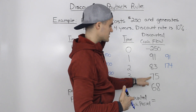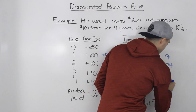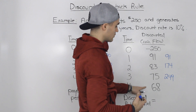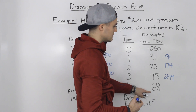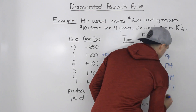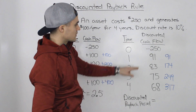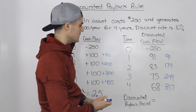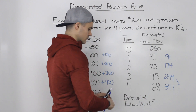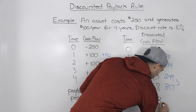In year three, the present value of the cash flow is $75, so in total we've recovered $174 plus $75 — that's $249 worth of present value cash flows. Then in year four we get $68, so $249 plus $68 gives us $317 recovered in present value cash flows. We recovered the initial $250 somewhere between year three and four, so the discounted payback period is 3-point-something.